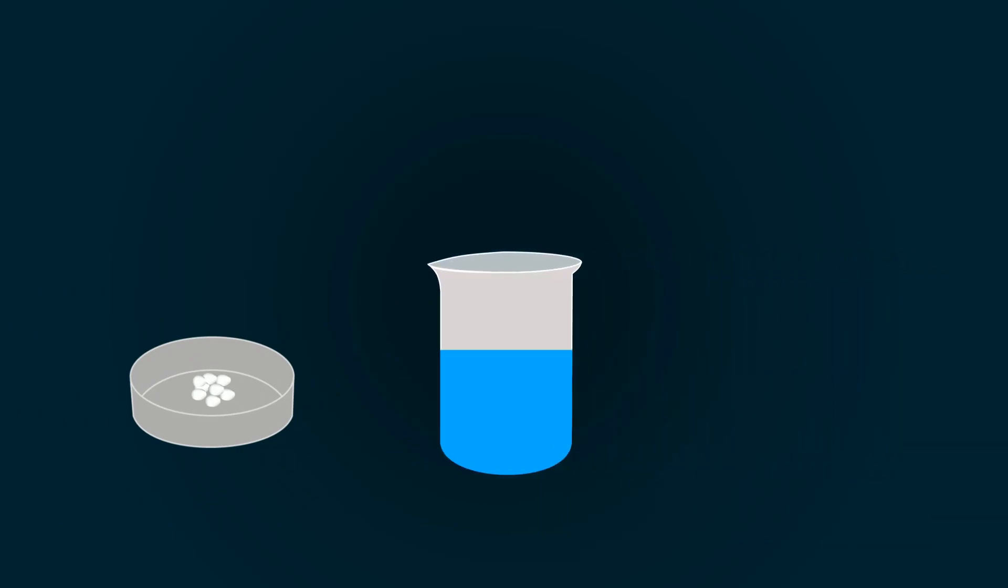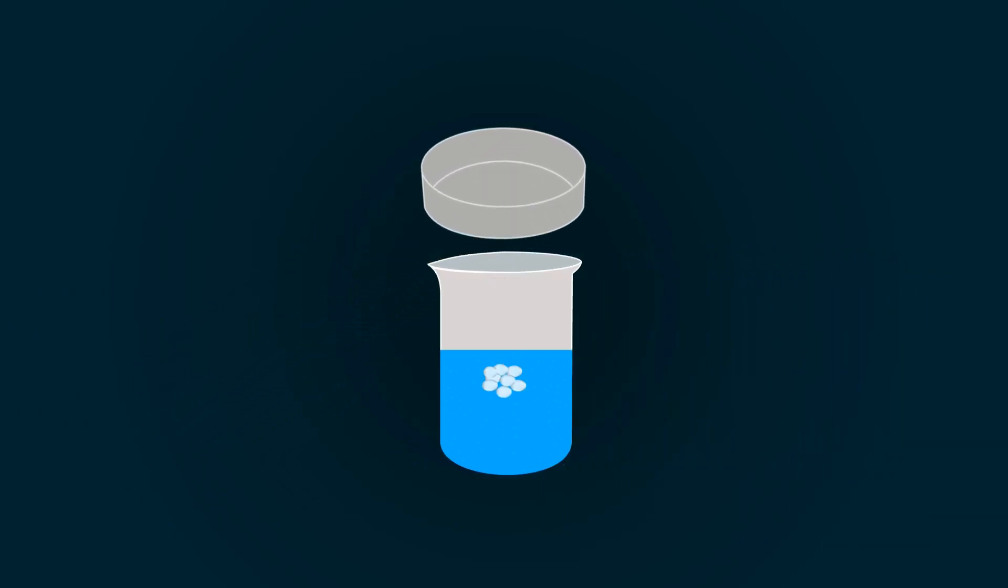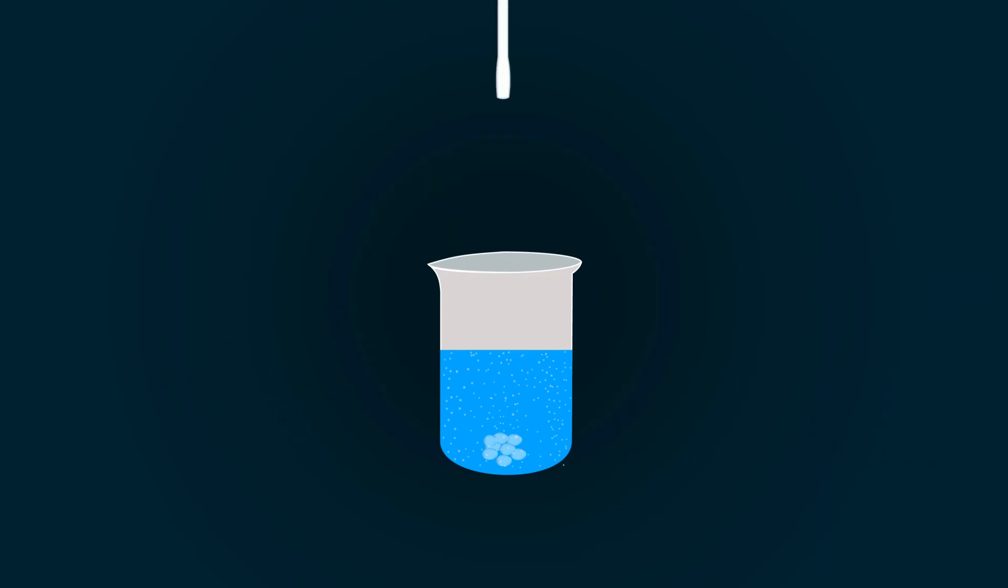Take distilled water in a beaker and add our sodium hydroxide into it. Stir it with the help of a hand stirrer to make a homogeneous solution.